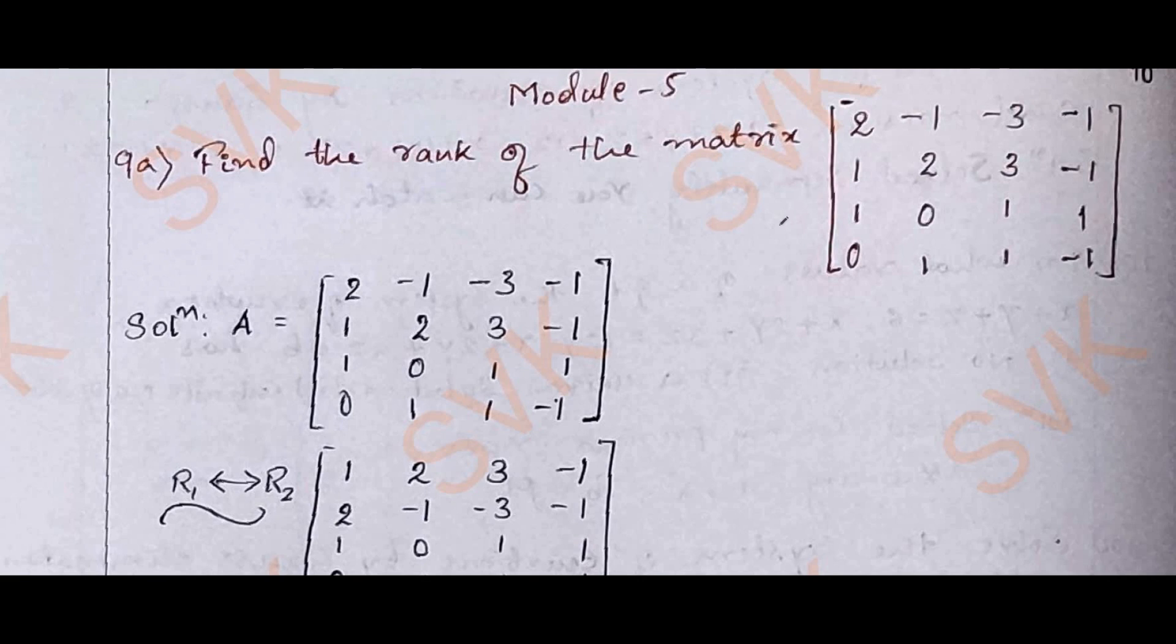To find the rank of the matrix, they have given a matrix A. You are required to find the rank of the matrix. You know the procedure to find the rank of the matrix. If you observe the leading entry, the leading entry should always be 1 and below the leading entry should be 0. That is the procedure here.